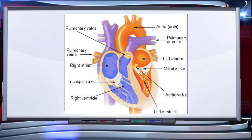Each of these septa are provided with an opening through which the two chambers of the same side are connected — the right atrium is connected with the right ventricle, and the left atrium with the left ventricle. The opening between the right atrium and right ventricle is guarded by the tricuspid valve, while the bicuspid valve is present between the left atrium and the left ventricle.